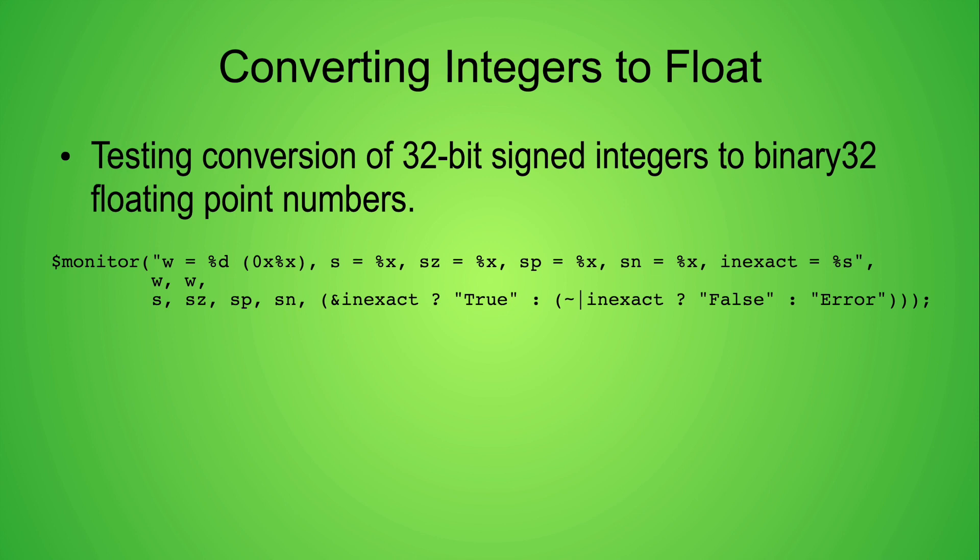These four floating point values are the results of the round ties to even, round toward zero, round toward positive, and round toward negative rounding attributes respectively. The $monitor statement also prints the value of the corresponding inexact flag value. Take a look at how the inexact variable is manipulated in the arguments list of the $monitor statement.